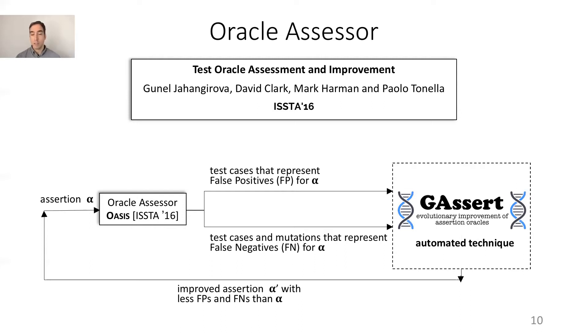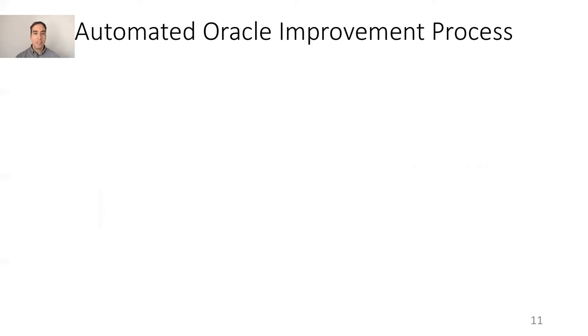Let's see in more details how our automated oracle improvement works. The input is a Java program and the program point in which the assertion is placed. J-Assert will instrument the method under analysis to collect the program state at runtime. It uses EvoSuite to generate an initial set of test cases.